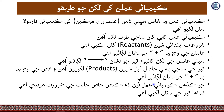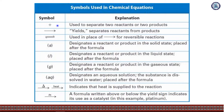In a chemical equation, if you have two reactants or two products, a plus sign is used to separate them. An arrow — called the yields sign — separates reactants from products.